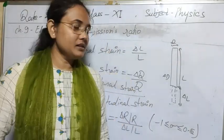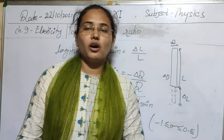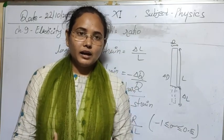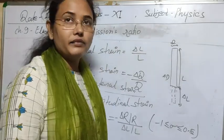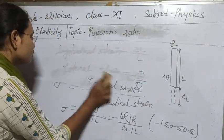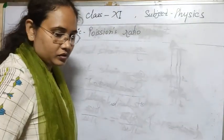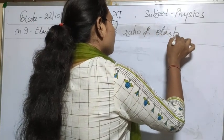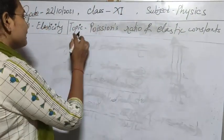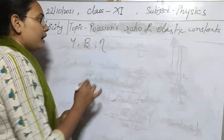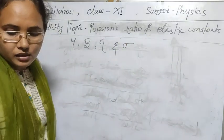Poisson's ratio helps us correct our understanding of Young's modulus of elasticity when there is a change in length, and it helps us derive the relationship between all elastic constants. We have three kinds of elastic constants — Young's modulus (Y), bulk modulus (B), and modulus of rigidity (η) — and Poisson's ratio (σ) is a fourth. These are all interrelated. The derivations need not be studied in detail, but the relationships are important.